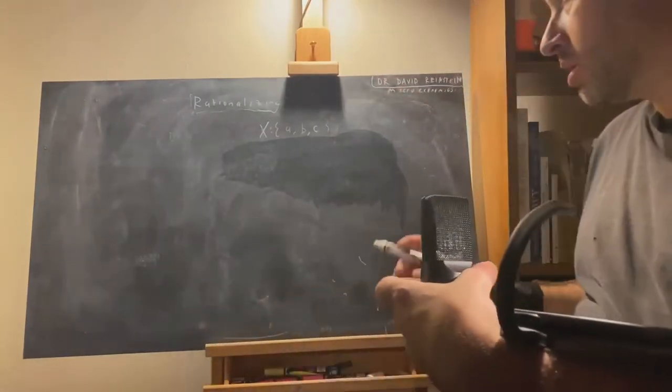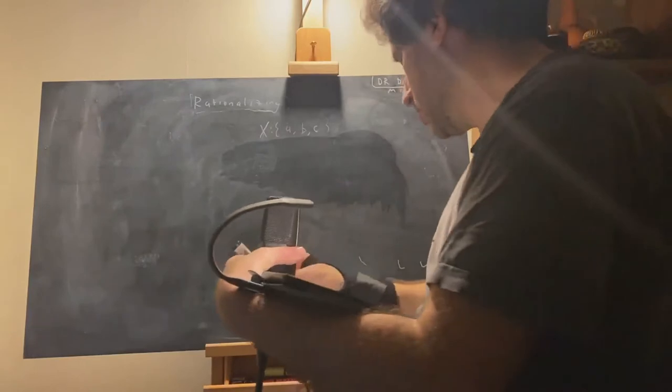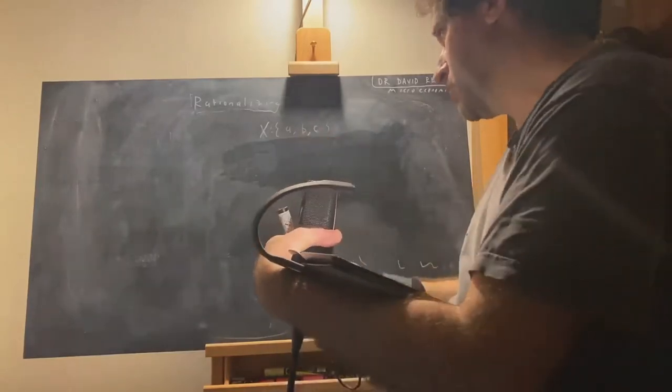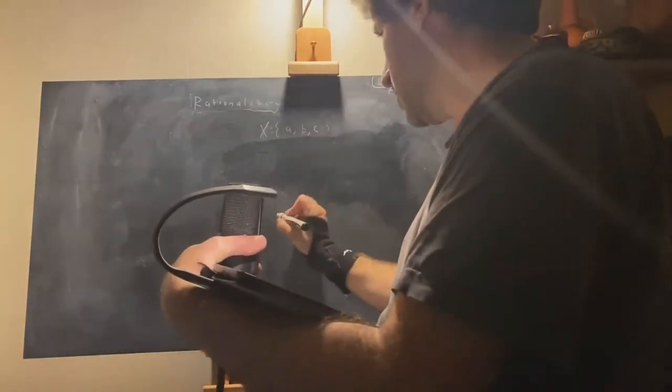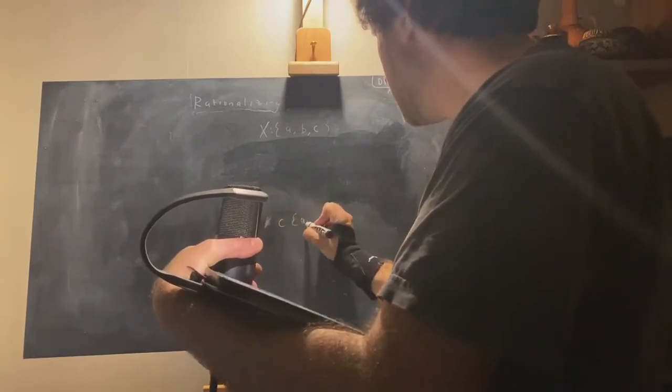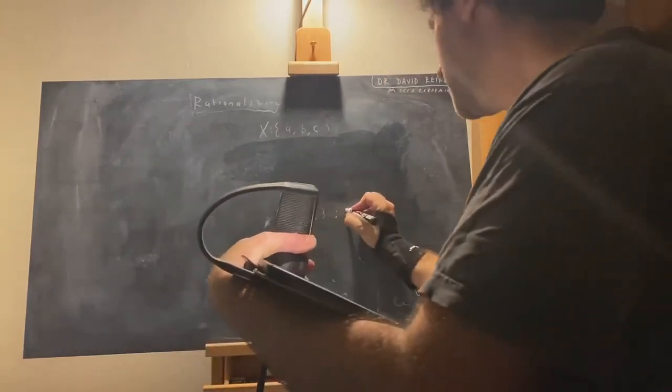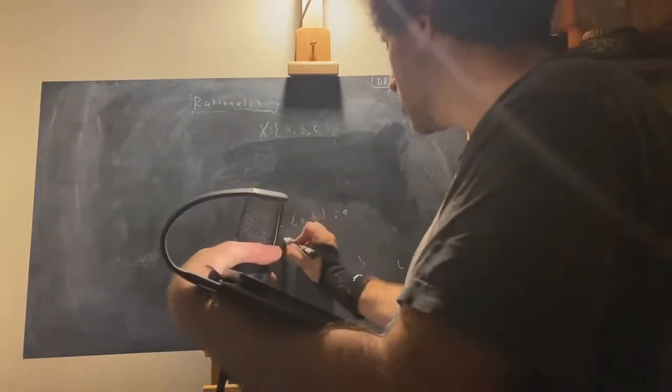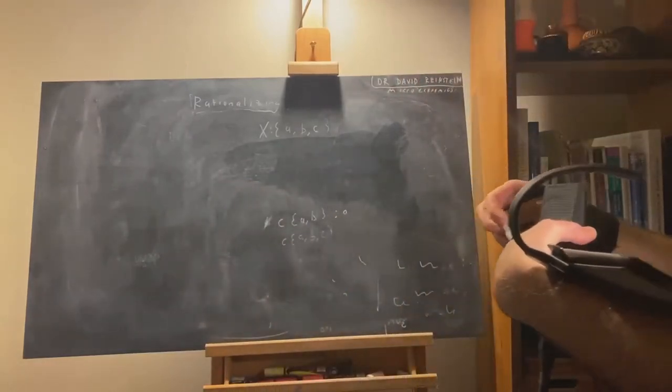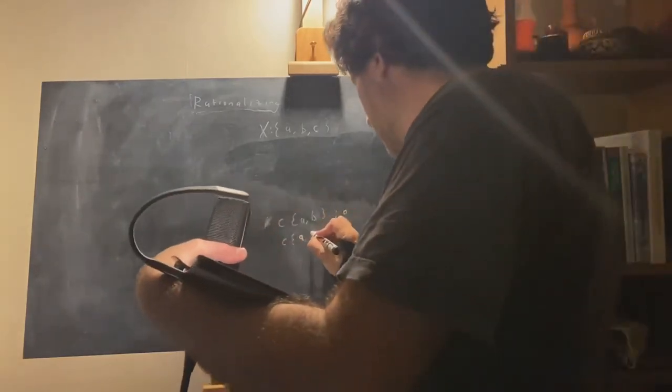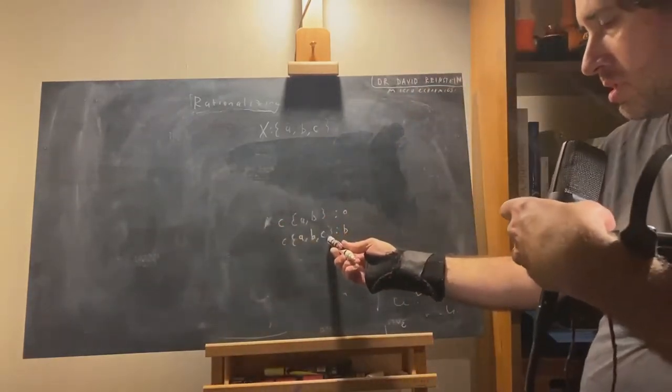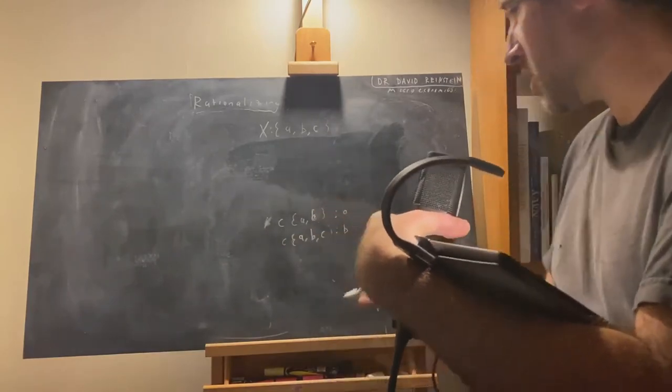Okay, if all we needed was for a choice function to be justified by some preferences that said it was equally the best, well imagine a choice function that assigns, let's say a choice function that assigns to the set A, B assigns A, and then it assigns B to the set A, B, C. Now, that is not going to be rationalizable. There's something weird going on here. I added an option, and my choice changed, but not to the new option. It changed to something I could have chosen already.